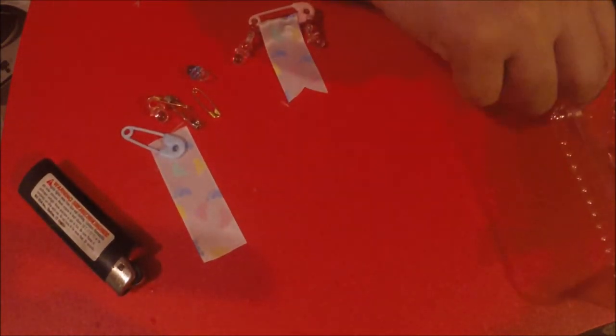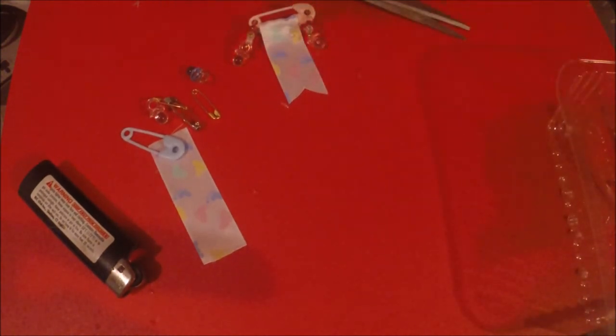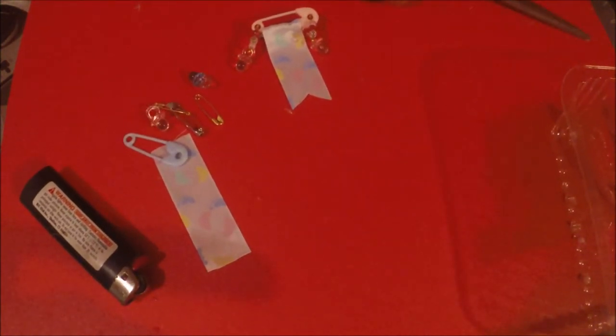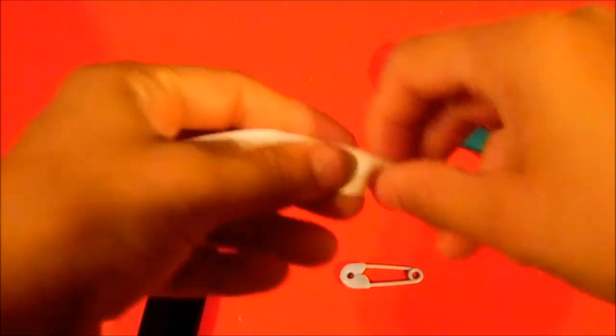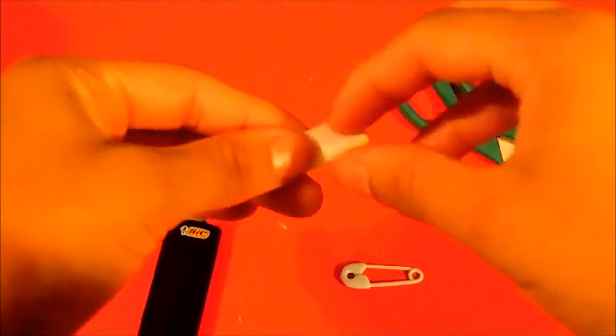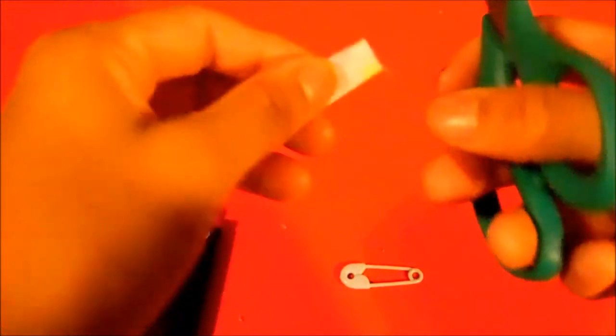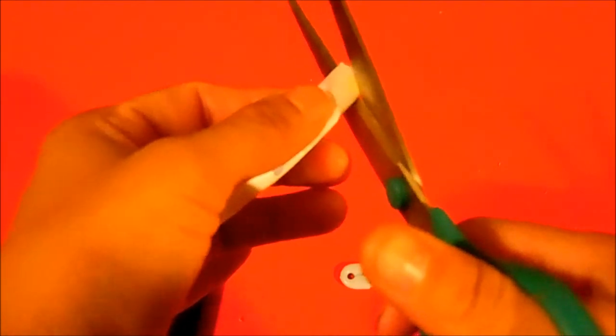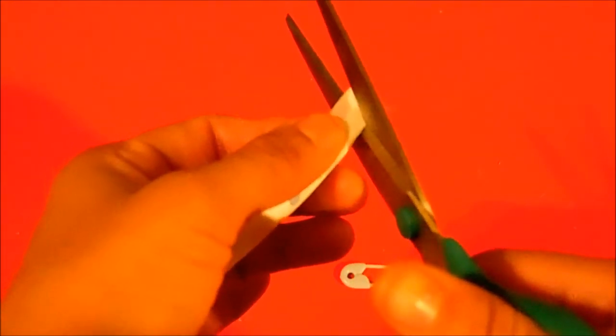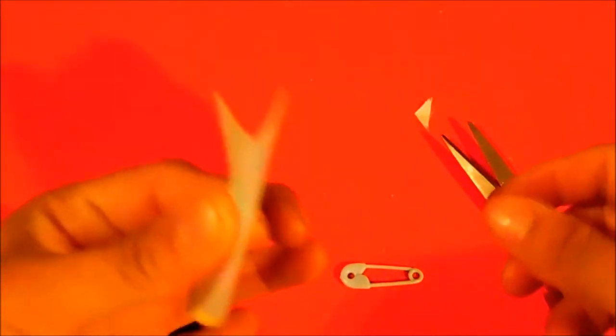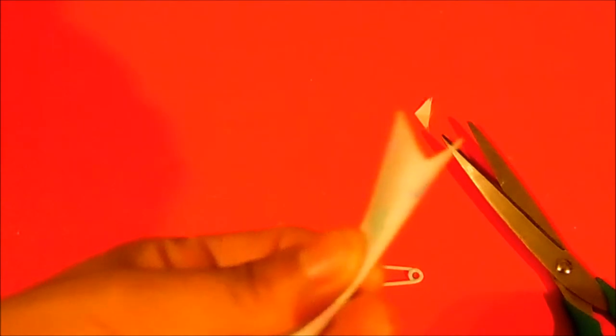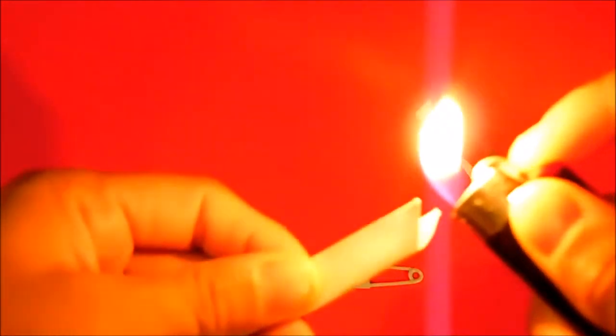We will grab the ribbon and fold it in half just like this. And then grab your scissors and cut it in an angle to get the V shape from the bottom. Then you grab your lighter and just pass it through the ribbon so it will seal the ends.